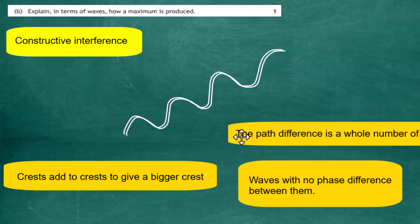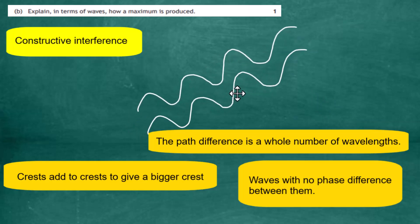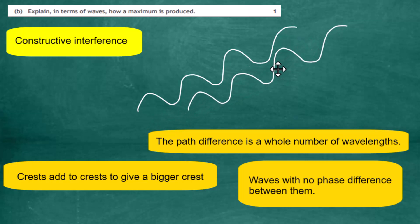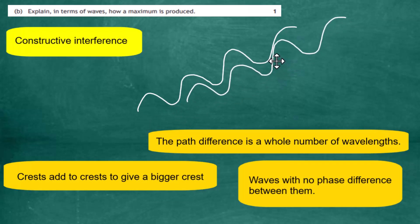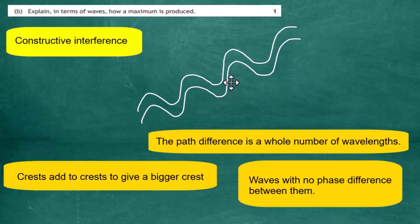Another way to state this is that the path difference between the two journeys each wave makes must be a whole number of wavelengths. For example, if one sound wave travels a distance one full wavelength longer than the other, it still arrives in phase and adds constructively to give a loud sound. So constructive interference — producing a maximum — requires a path difference equal to a whole number of wavelengths, zero phase difference, and crests adding to crests.